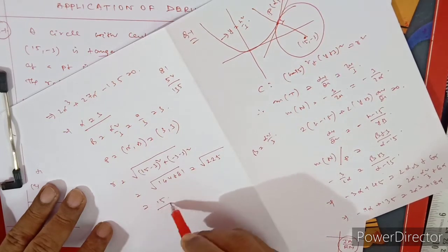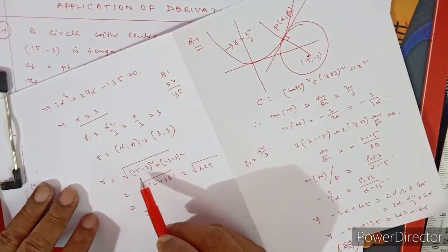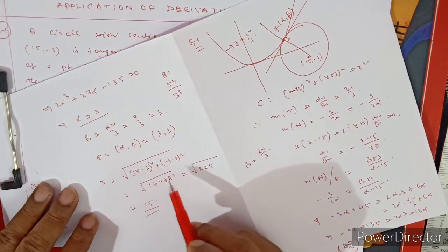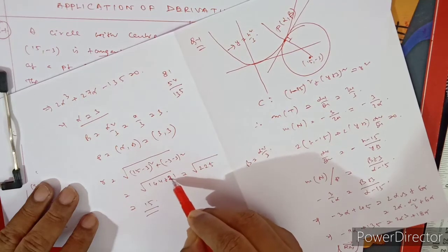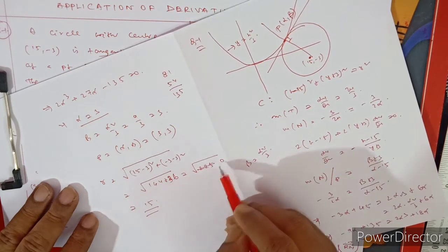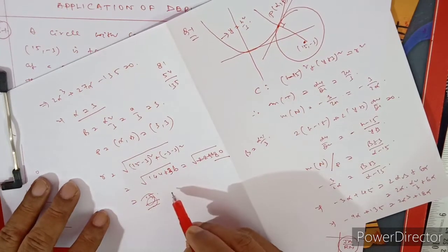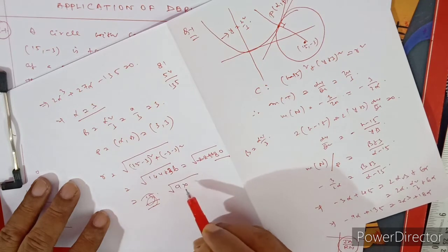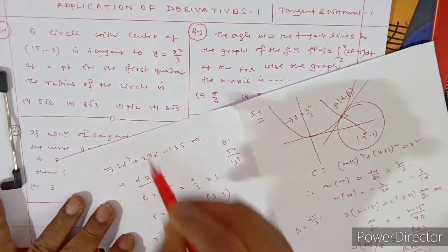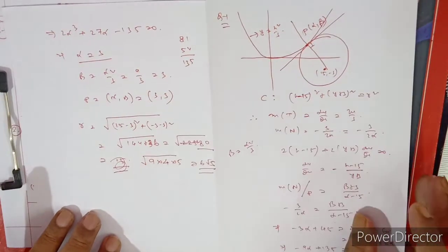Continuing: r = √[144 + 36] = √180 = √(36×5) = 6√5. So the radius is 6√5. This is a very good question — try to understand it thoroughly. This option is the correct answer.